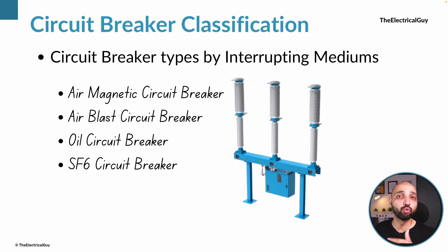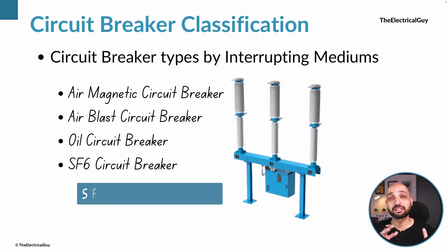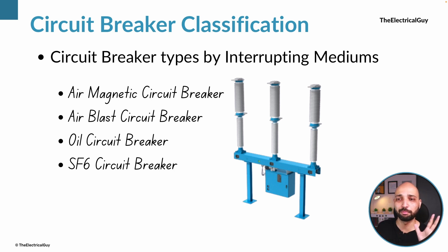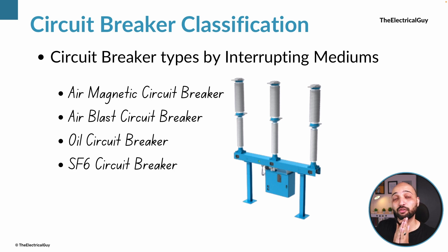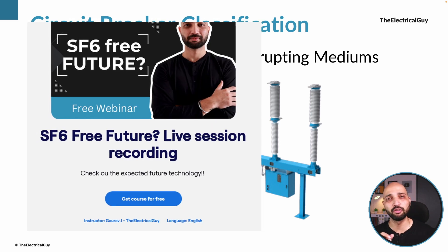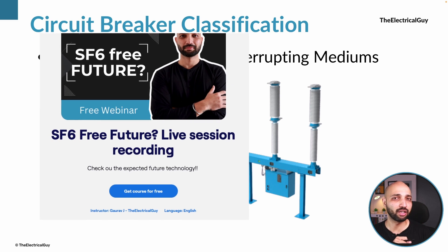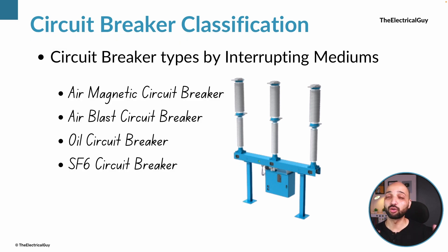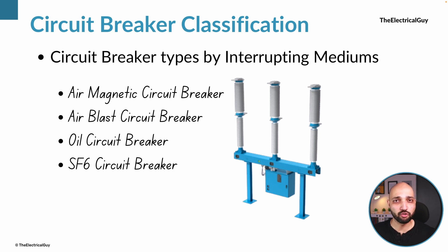SF6 circuit breakers are available up to 800 kV voltage levels and currently dominate the market. However, manufacturers and the industry are now talking about going SF6-free, and many manufacturers have already developed solutions that do not need SF6 gas for current interruption. Currently, for 36 kV and above, all the breakers you will see in switchgear are of SF6 type technology.